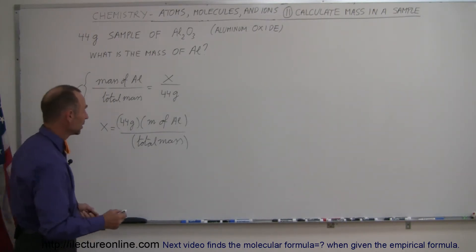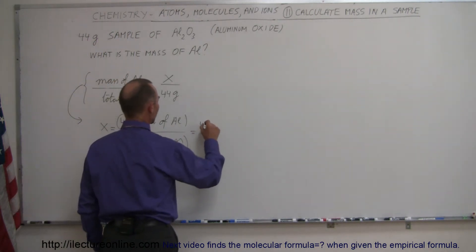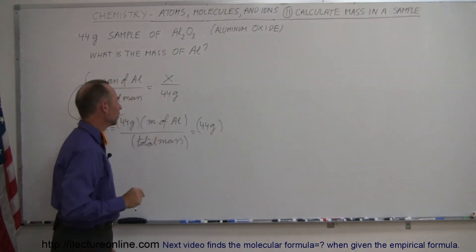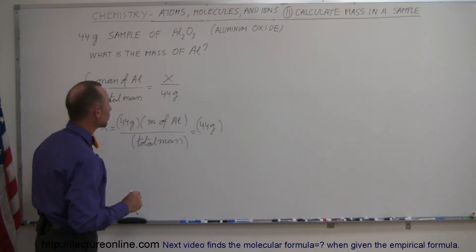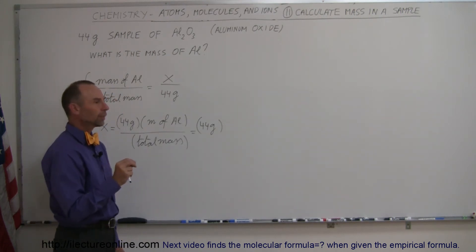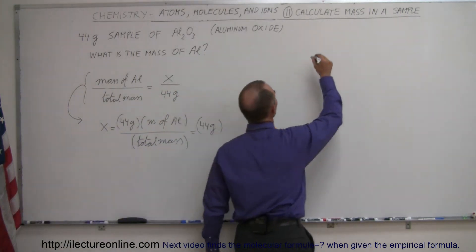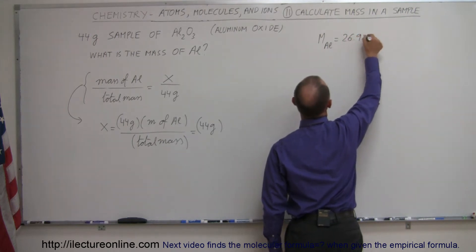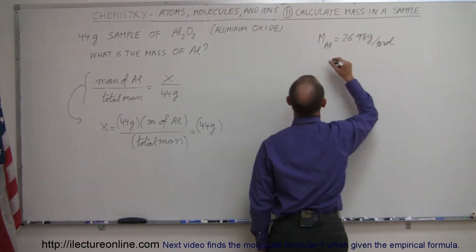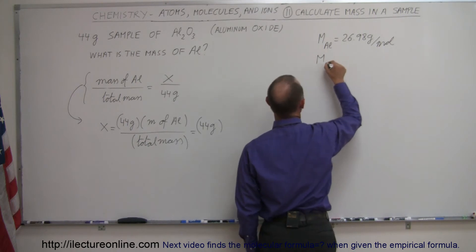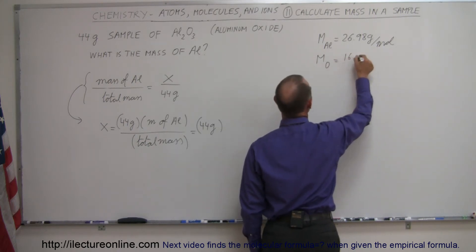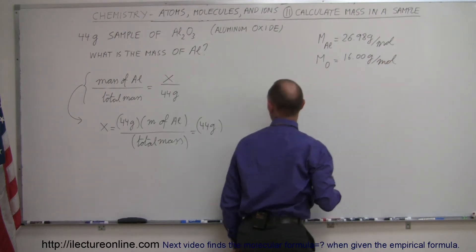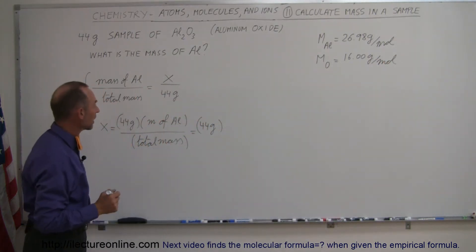Now all we have to do is plug in the numbers. This is going to be 44 grams times — how do we express the mass of aluminum? Well, we know the molar mass. The molar mass of aluminum is equal to 26.98 grams per mole, and the mass of oxygen, the other element in there, is equal to 16.00 grams per mole. These are the molar masses of aluminum and oxygen.